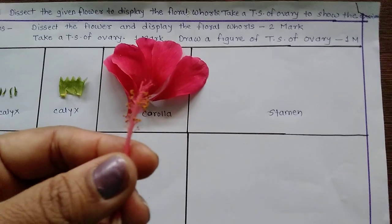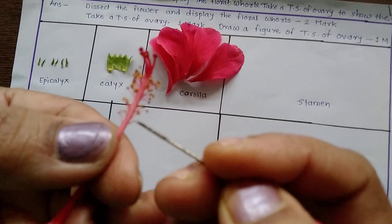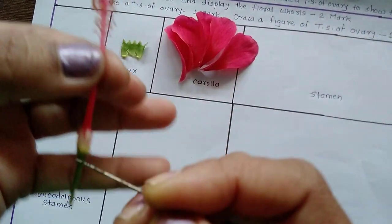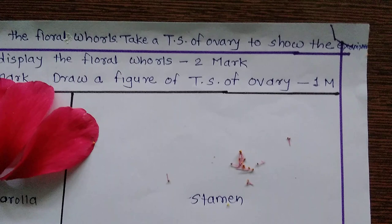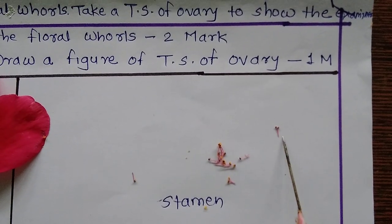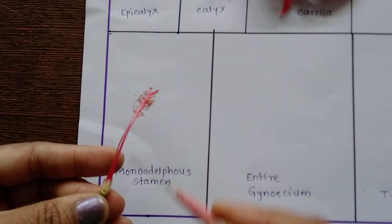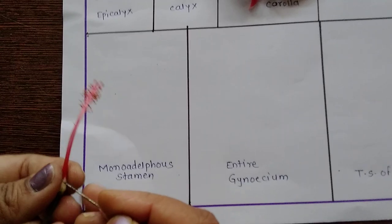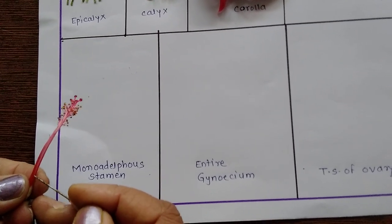Next is the stamen. The stamen has kidney-shaped anthers and filaments. Many androecium parts are attached to a single tube, so it is called monadelphous stamen. The anther is the kidney-shaped structure and the long thread-like structure is called the filament. The number of stamens are attached on a single tube-like structure, so it is called monadelphous stamen. Separate this monadelphous stamen by taking a clean and careful cut.